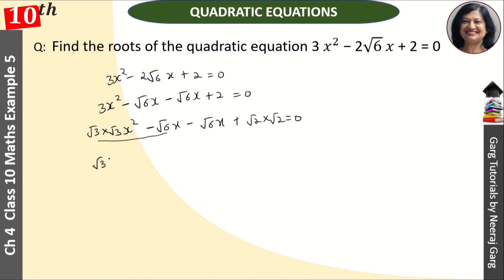Root 3x is common, right? In the inside, root 3x minus root 2. Root 6 is common, so root 2 is common, okay?